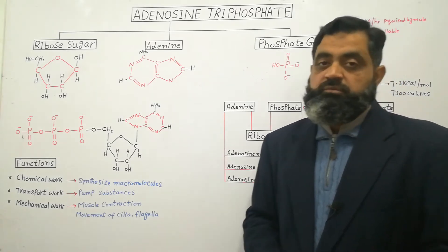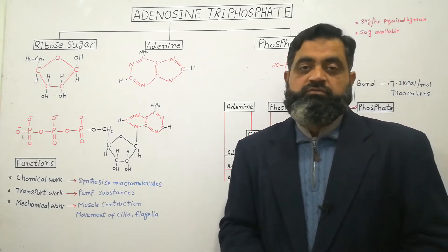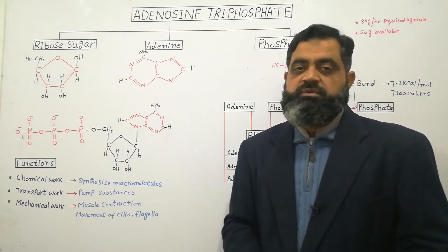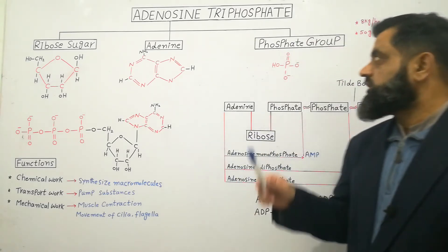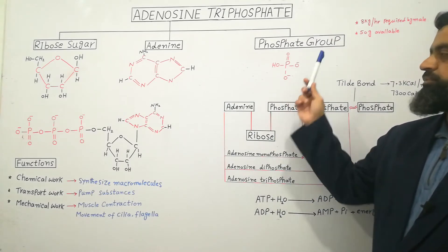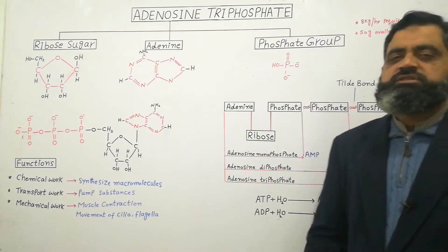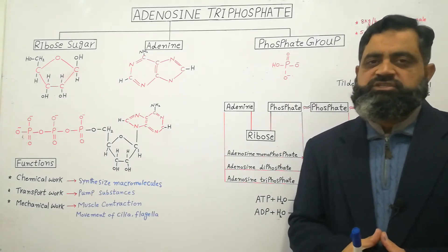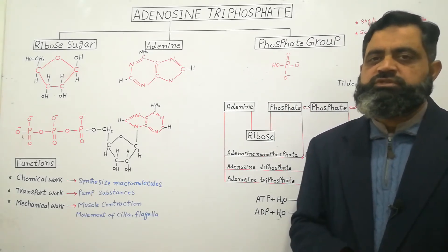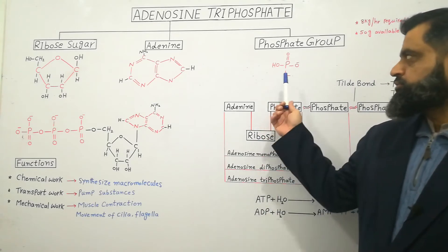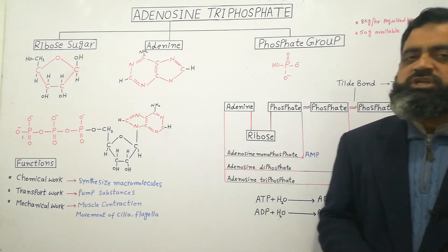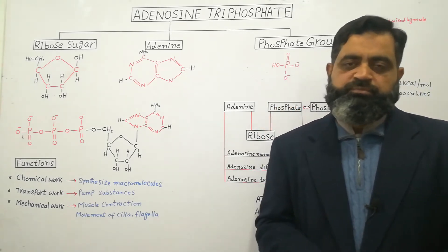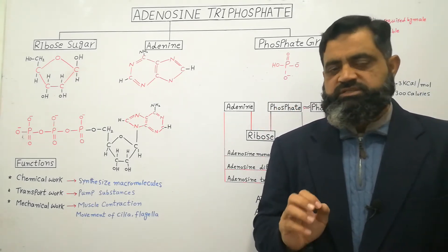The third component which we need to synthesize ATP is a phosphate group. It is simply phosphoric acid, H3PO4, and we need three molecules of the phosphate group to synthesize ATP.